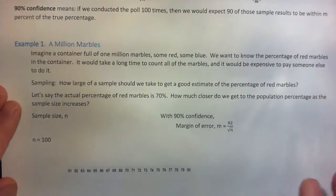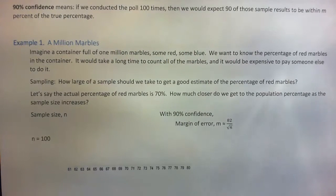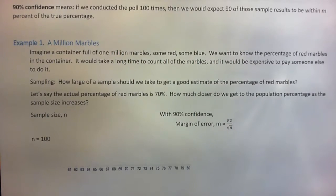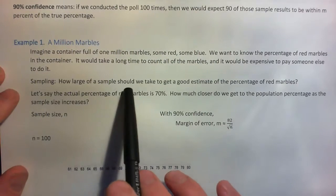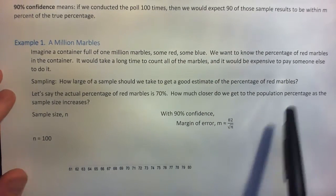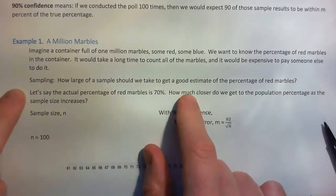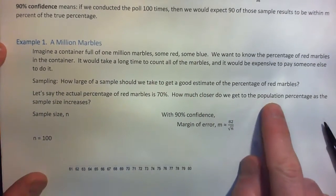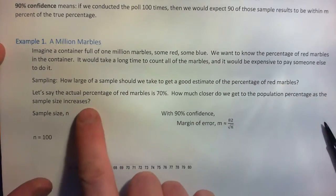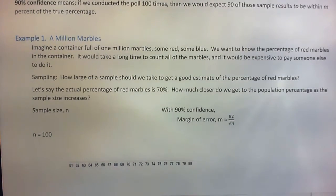Imagine a container full of a million marbles — some red, some blue. We want to know the percentage of red marbles. It would take a long time and be expensive to count all of them. So how large a sample should we take to get a good estimate? Let's say the actual percentage is 70% — you're not supposed to know that, that's what we're trying to find. How close do we get to the population percentage as the sample size increases? Let's say we pull out 100 marbles.